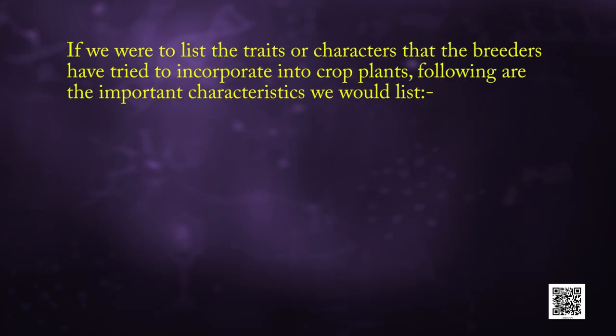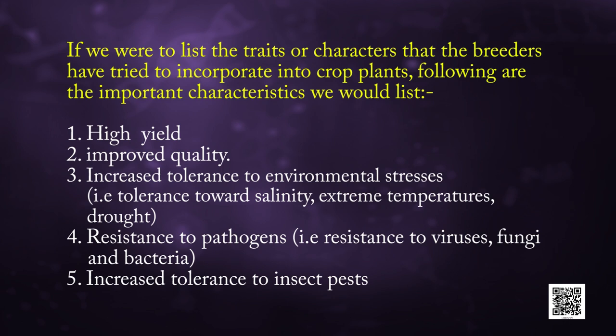If we were to list the traits or characters that breeders have tried to incorporate into crop plants, the important characteristics would include: high yield, improved quality, increased tolerance to environmental stress like salinity, extreme temperature, drought, and resistance to pathogens like fungi, viruses and bacteria, as well as increased tolerance to insect pests.